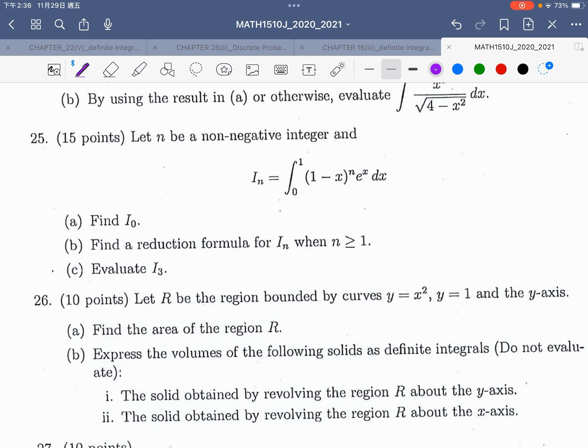This question is reduction formula. I_n equals the integration from 0 to 1 of (1 - x)^n times e^x dx.